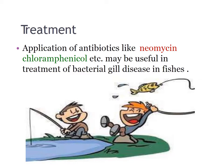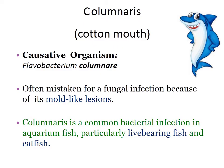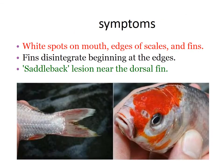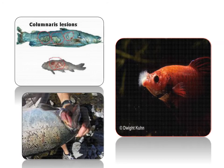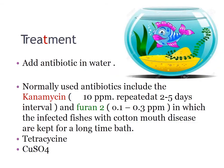Columnaris, also known as cotton mouth disease, is caused by Flavobacterium columnare. Often mistaken for a fungal infection because of its mold-like lesions, it is a common bacterial infection in aquarium fish, particularly livebearing fish and catfish. Symptoms include white spots on mouth, edges of scales and fins, fins disintegrating beginning at the edge, and saddleback lesions near the dorsal area.